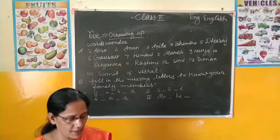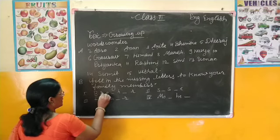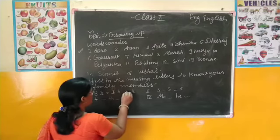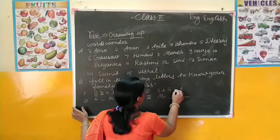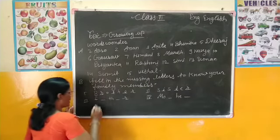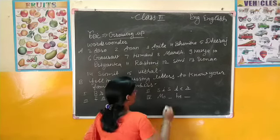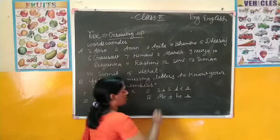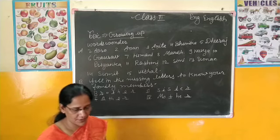अब इन्हें हम complete करेंगे। Brother: B-R-O-T-H-E-R। Sister: S-I-S-T-E-R। Father: F-A-T-H-E-R। Mother: M-O-T-H-E-R। यह हमने spellings को complete किया है।